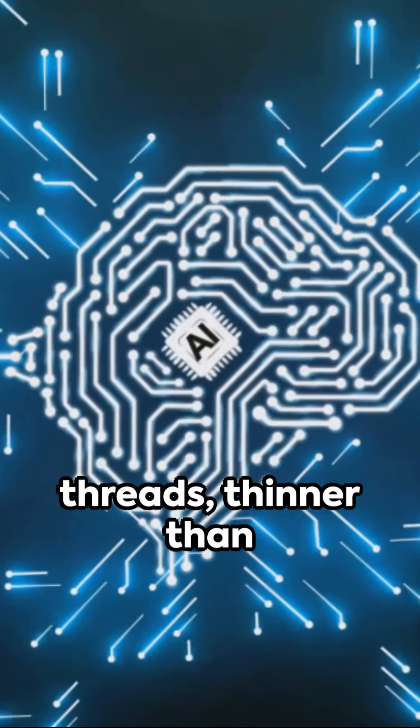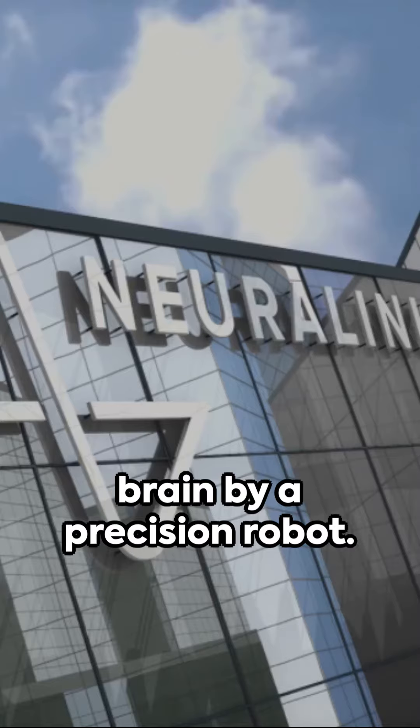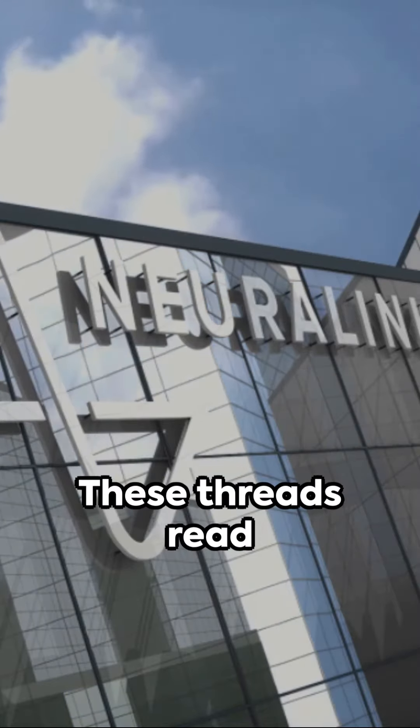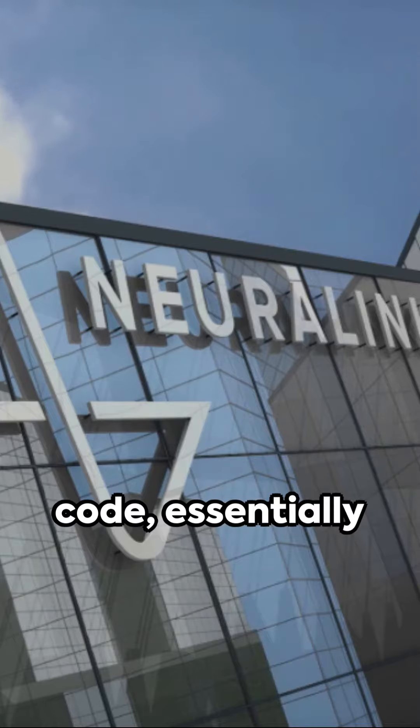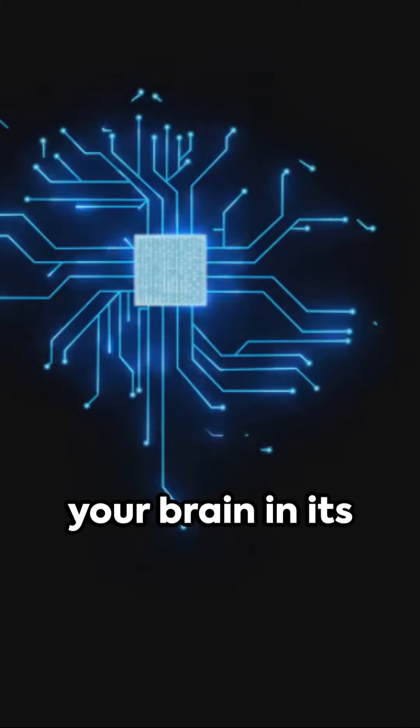Picture tiny threads, thinner than a human hair, implanted into your brain by a precision robot. These threads read and write neural code, essentially communicating with your brain in its native language.